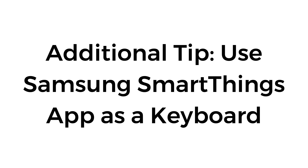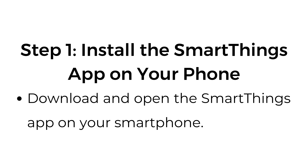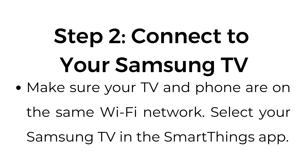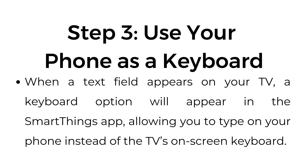Additional tip: use Samsung's SmartThings app as a keyboard. Step number one, install the SmartThings app on your phone — download and open the SmartThings app on your smartphone. Step number two, connect to your Samsung TV — make sure your TV and phone are on the same Wi-Fi network, then select your Samsung TV in the SmartThings app. Step number three, use your phone as a keyboard — when a text field appears on your TV, a keyboard option will appear in the SmartThings app, allowing you to type on your phone instead of the TV's on-screen keyboard.